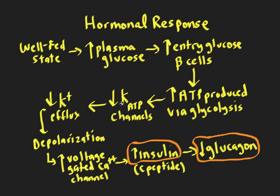The K-ATP channels play a crucial role in glucose-mediated insulin secretion, and they are drug targets for medications used to treat diabetes mellitus. Along with rising insulin, insulin itself flows by the alpha cells in the islets and suppresses glucagon. So the hormonal profile in the well-fed state is increased insulin and decreased glucagon — exactly the opposite of the fasting state.